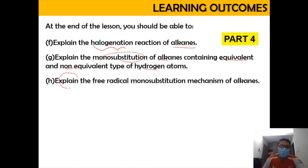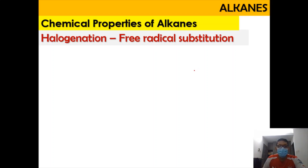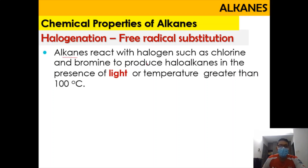We're going to explain the free radical monosubstitution mechanism of alkenes. Halogenation means that we're going to insert a halogen group or atom — for example chlorine or bromine — into the alkene, converting it into a haloalkene. This halogenation reaction occurs under light or UV where the temperature is greater than 100°C.